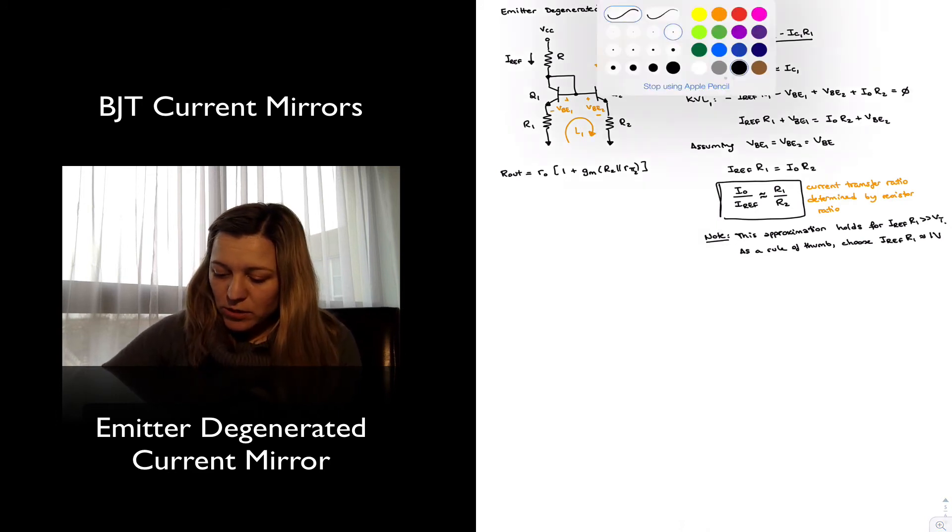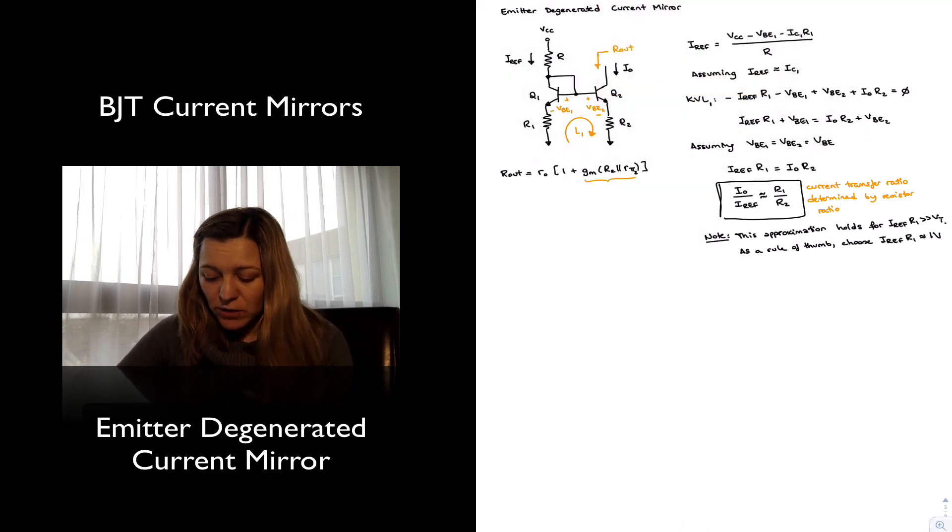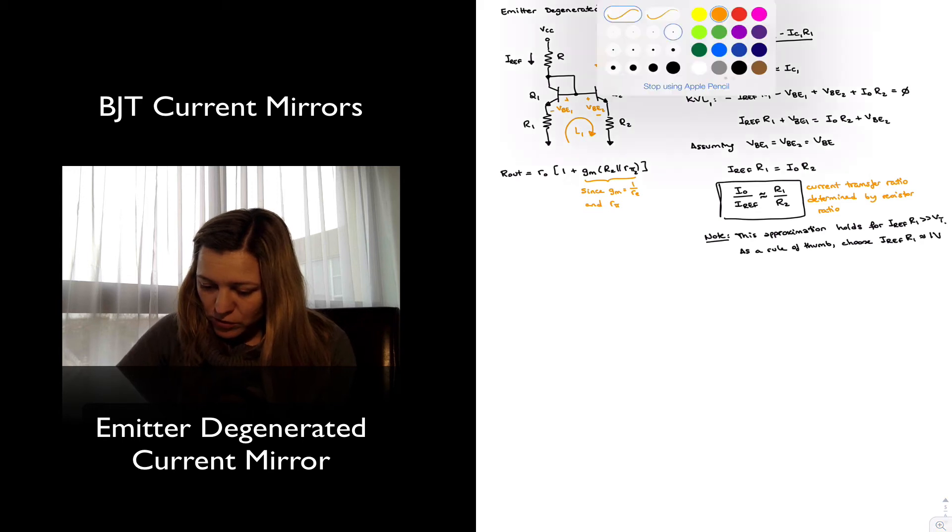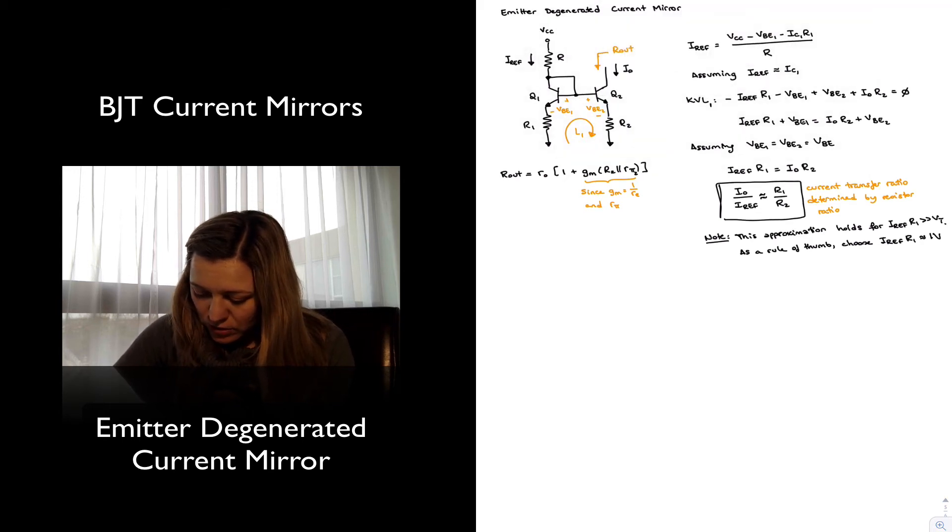Another thing to notice is that there is a maximum value for this, since gm is equal to 1 over little r_E, and Rpi is equal to beta times little r_E. This is gm2 and Rpi2.